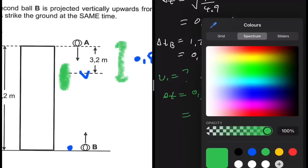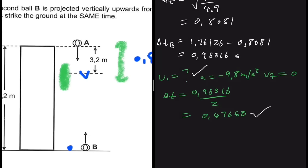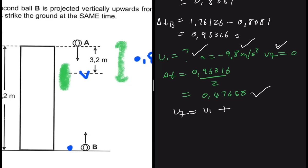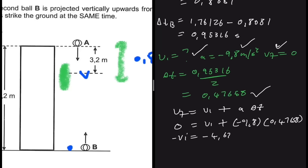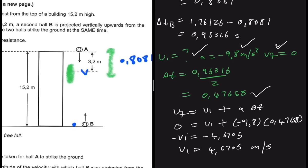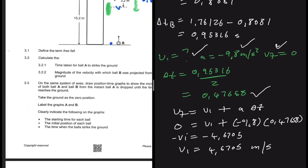Calculating: vi = 9.8 × 0.4766 ≈ 4.67 m/s. That is the initial velocity with which ball B was projected upwards. Now for question 3.3: draw position-time graphs for both balls on the same axes, from when ball A is dropped until it reaches the ground, taking the ground as the zero position.